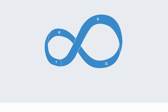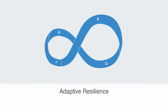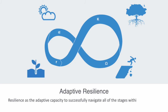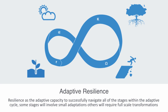Although the adaptive cycle is a heuristic model, it does tell us something about the stages of the process of adaptation. With it, we can understand resilience as the adaptive capacity to successfully navigate all the different stages within the adaptive cycle, where some stages will involve only small adaptations while others will require full-scale transformations to the whole system. It is in the socio-ecological system's capacity to effectively adapt to these changes that the system may maintain a dynamic evolutionary state, allowing it to develop over time.